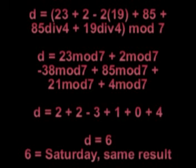D equals 23 modulo 7 plus 2 modulo 7 minus 38 modulo 7 plus 85 modulo 7 plus 21 modulo 7 plus 4 modulo 7. D equals 2 plus 2 minus 3 plus 1 plus 0 plus 4. D equals 6. 6 equals Saturday. Same result.